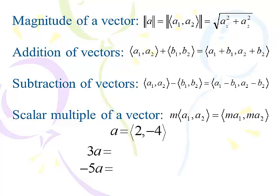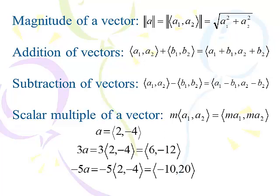For scalar multiples, if we multiply by a positive number, the vector stays in the same direction. If we multiply by a negative value, it goes in the opposite direction. To multiply, simply distribute the scalar. So 3a with vector (2, -4) gives (6, -12), and negative 5a gives (-10, 20). So you can find the magnitude, addition, subtraction, or scalar multiples of vectors.